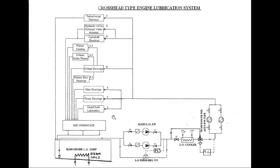Thrust bearings are required to transmit axial propeller thrust to the ship's hull via the engine thrust bearing foundation. In MAN B&W two-stroke engines, lube oil at a pressure of about 3 to 3.5 bar is supplied to the crosshead bearing by means of a telescopic pipe. In Sulzer engines, lube oil is first supplied to an engine-driven or separately driven crosshead lube oil pump; all modern engines have electrically driven crosshead pumps which develop a high pressure of about 12 to 16 bar, supplied through an articulated swinging arm to the crosshead bearing.